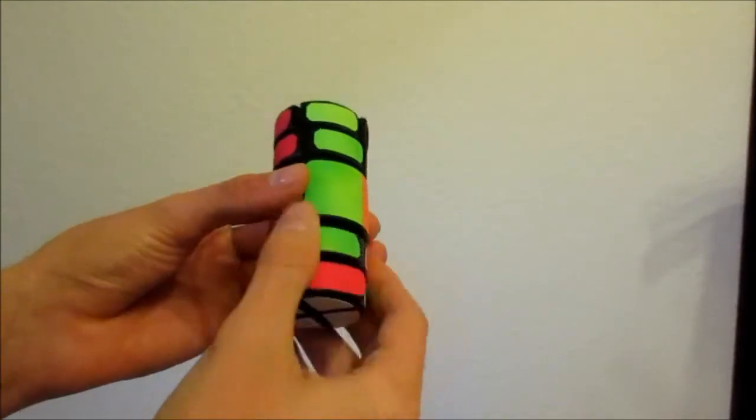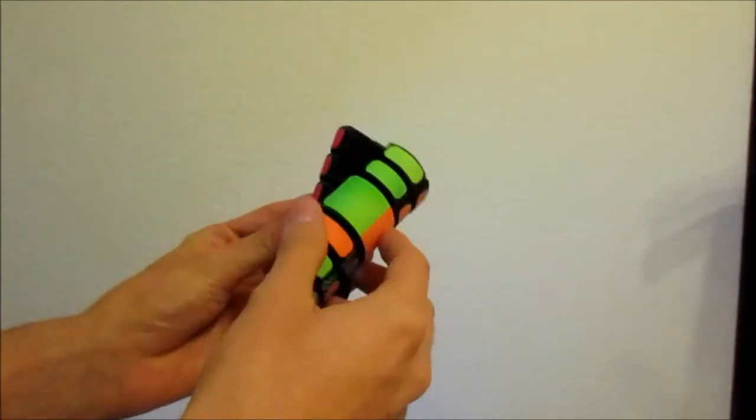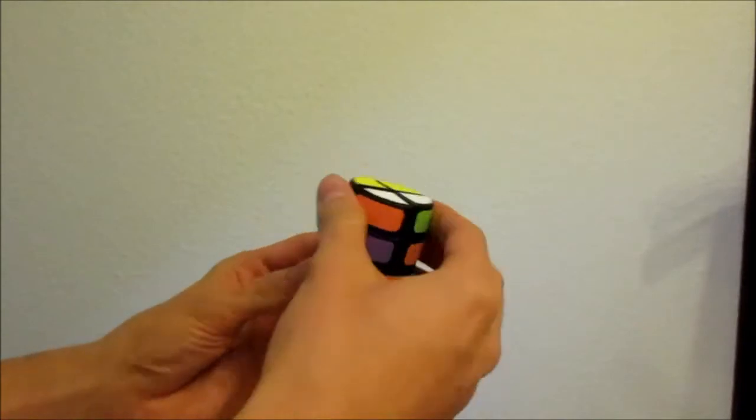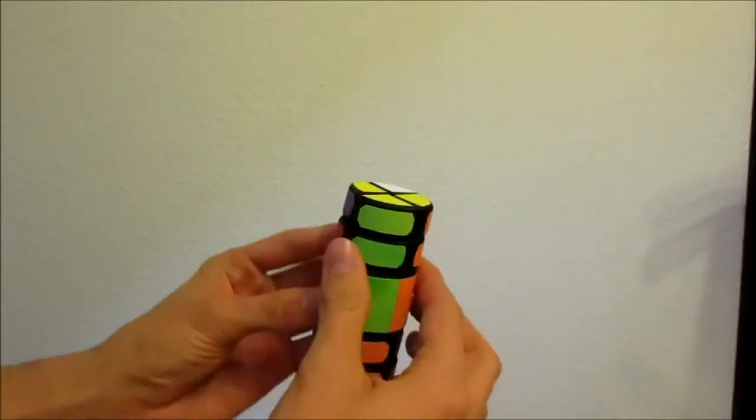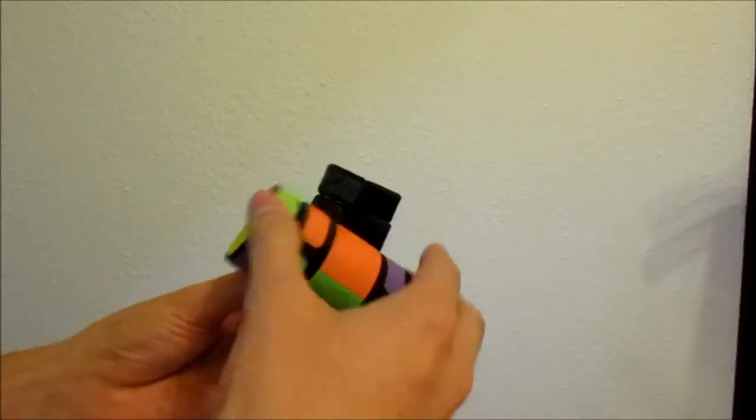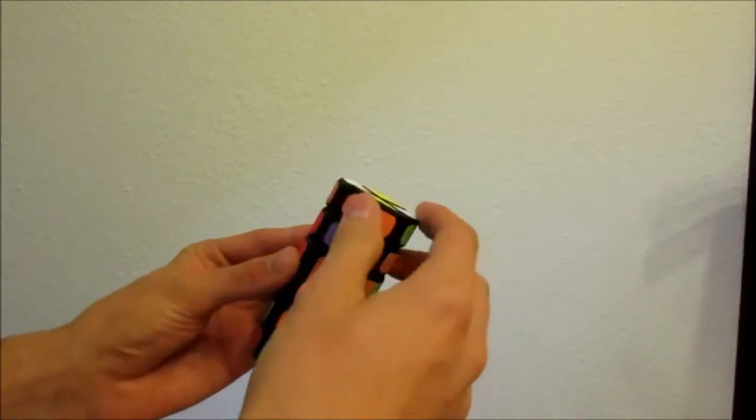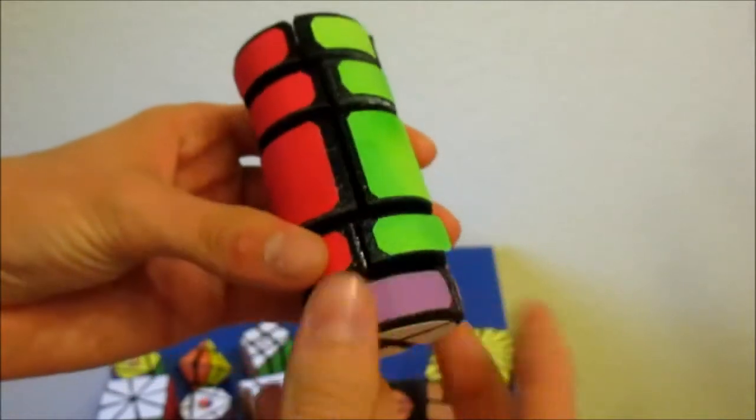Like the C-10, the C-18 tower has a bandaged middle piece and allows for 90 degree turns on the 2x2 faces. The movement is decent but not as good as on its smaller brother. You can clearly feel that this puzzle has a more complex mechanism.